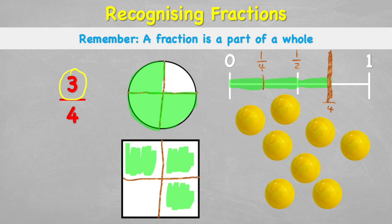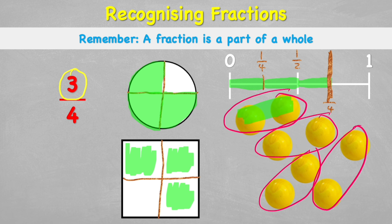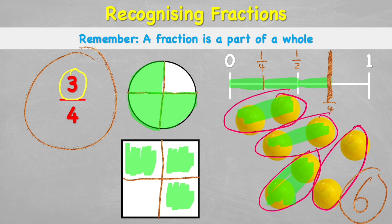To find three quarters of eight marbles, I put them into four equal groups — one, two, three, four — and then three quarters means taking one, two, three of those groups, which is six marbles. So three quarters is another really important fraction to understand.